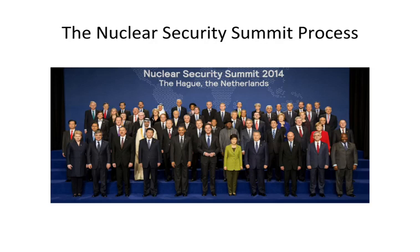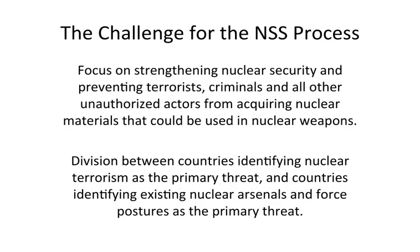So what did all that lead to? It led to a 53-country security summit process — the NSS, or Nuclear Security Summit process. The whole idea was that these countries would convene and agree on various measures to reduce the nuclear threat to the world. The United States and President Obama wanted to focus on strengthening nuclear security by preventing terrorists, criminals, and other unauthorized actors from acquiring nuclear materials that could be used in nuclear weapons. That was the US priority.